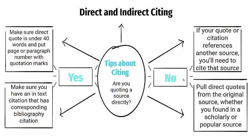So just a couple of tips about direct citing. Are you quoting a source directly? Make sure your quote is under 40 words if it's a direct quotation. Put the page or paragraph number with quotation marks. Make sure that you have an in-text citation that has a corresponding bibliographic citation. If you're using Conin 2012, you would need to have the full citation in the bibliography as well.